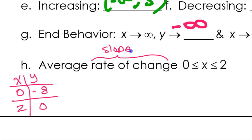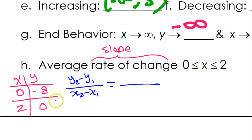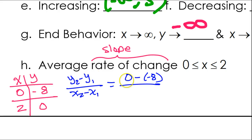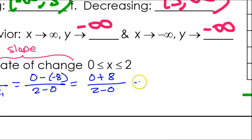Now the formula for slope: slope is (y₂ - y₁) / (x₂ - x₁). So y₂ minus y₁ is 0 minus negative 8 — be careful, some people would accidentally put 0 minus 8, which is completely different. It's 0 minus negative 8, which is a double negative. Then x₂ minus x₁ is 2 minus 0. When you have minus a negative, that's addition. So this is really 0 plus 8 over 2 minus 0 — that's 8 over 2, which equals 4.